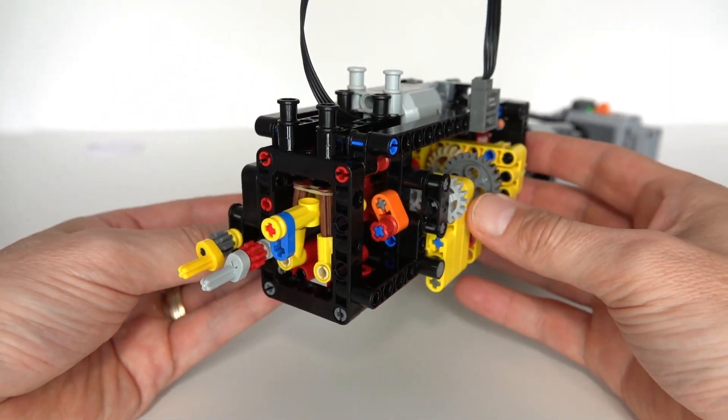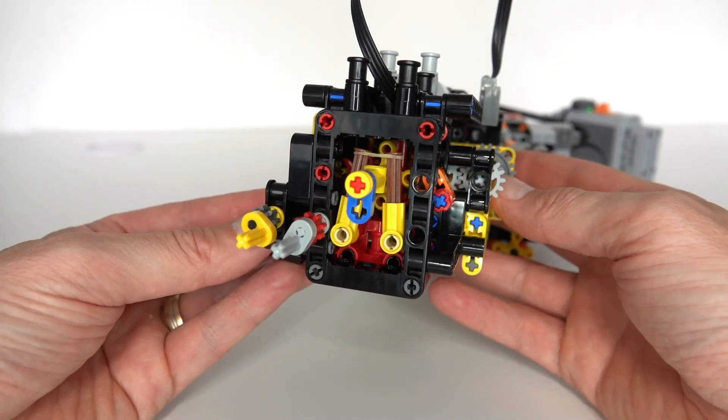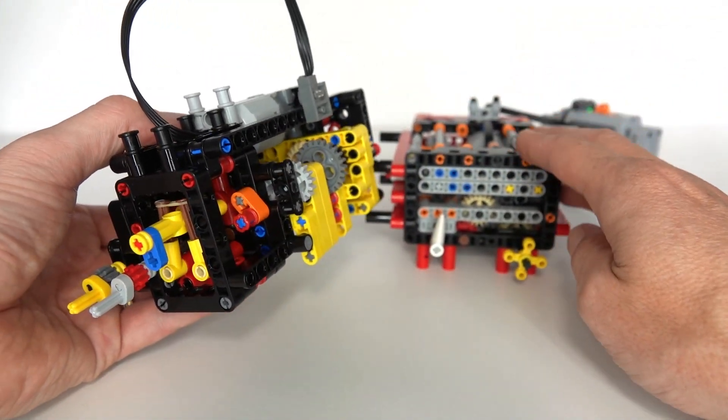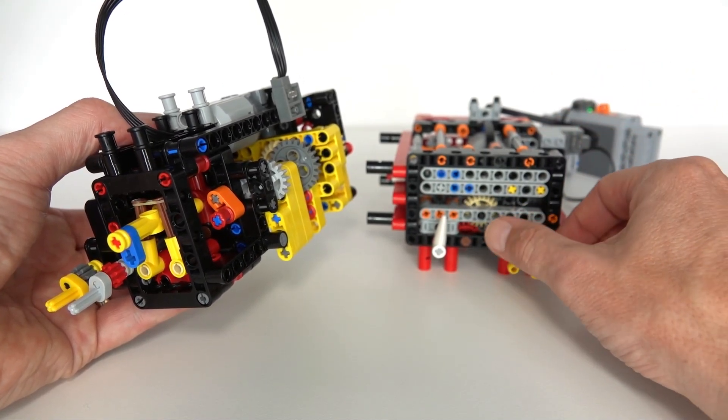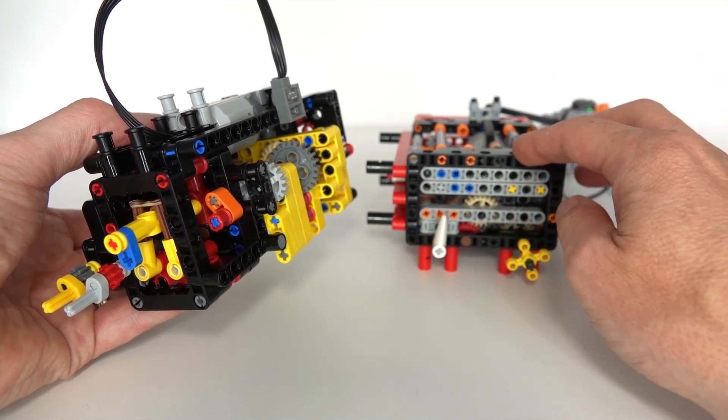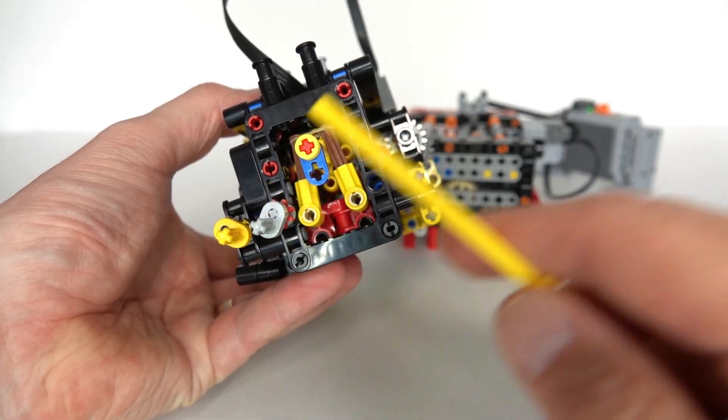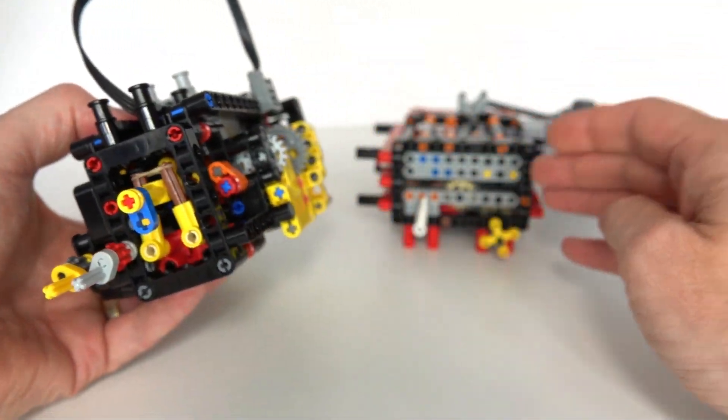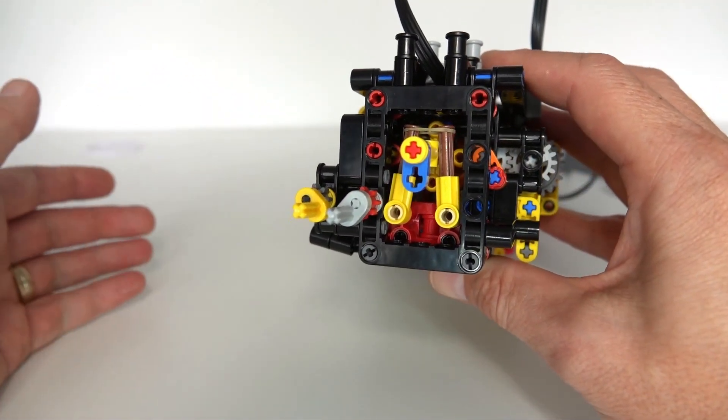Those are some of the improvements I've made to this gearbox implementation. The other main difference is the actual functions that it implements. The gearbox in the background from a couple of weeks ago implements four different gears—one output and four different gears. The difference here is that this particular gearbox implements two outputs and each of those outputs has two directions, either forwards or backwards. Rather than having a single output with four gears, we've now got two outputs with effectively two gears—one being forward and one being reverse.